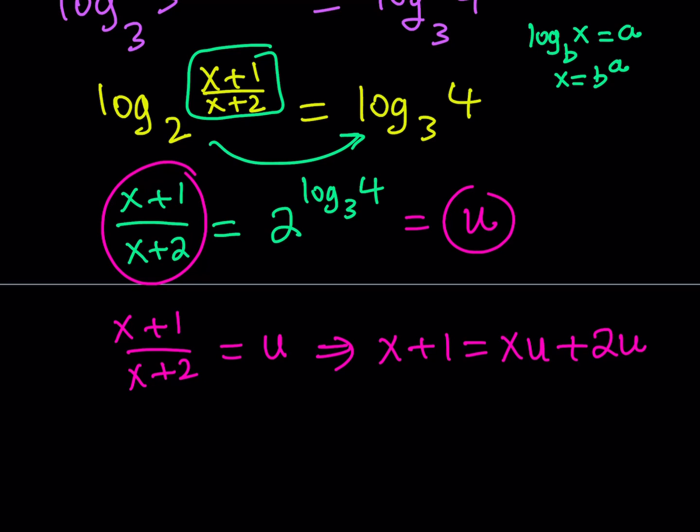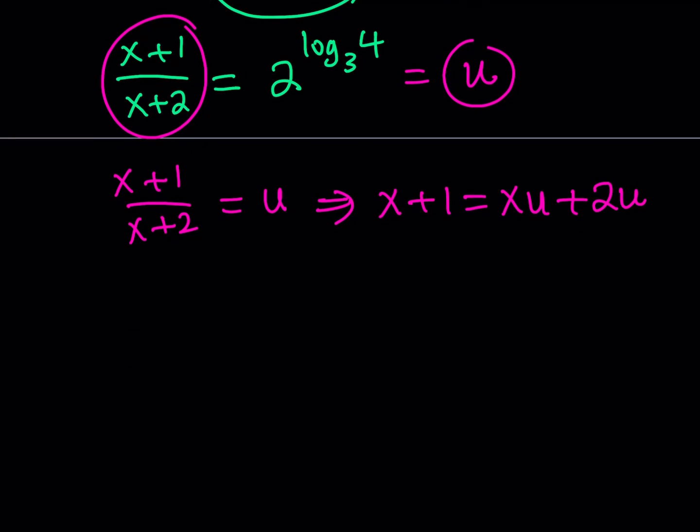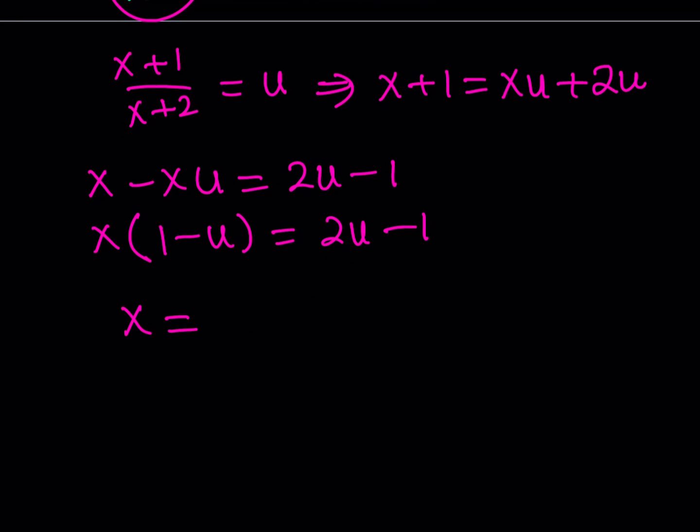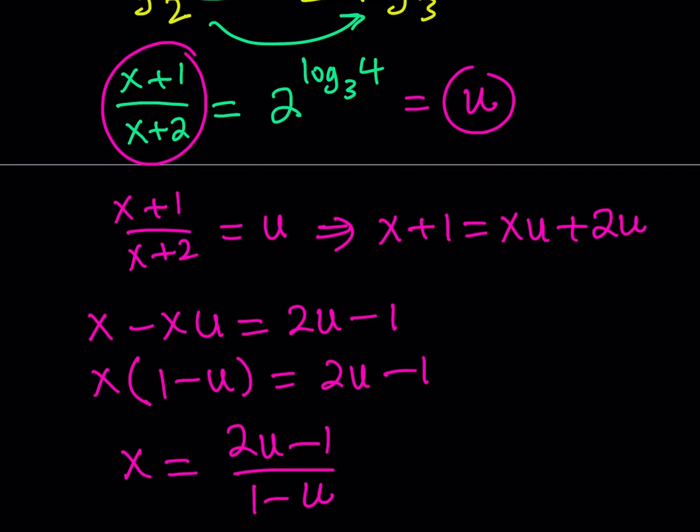That should look like x plus 1 is equal to xu plus 2u. Now since I'm trying to solve for x let me go ahead and subtract xu from x and subtract 1 from 2u. Now let's take out x, 1 minus u, and then 2u minus 1. And then obviously our goal is to solve for x. So let's go ahead and do it. Now I was able to solve for x in terms of u. This is actually equivalent to finding the inverse of this function. So if this is a rational function I found its inverse.